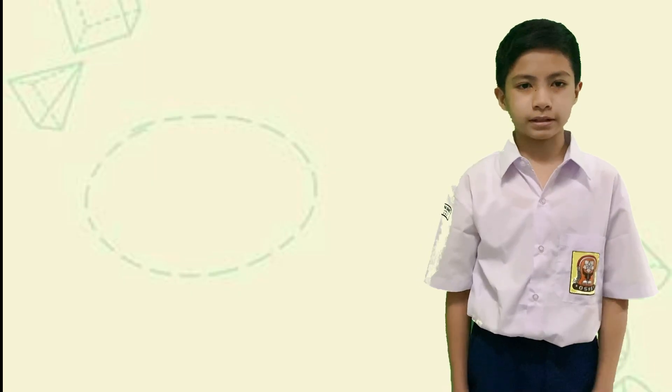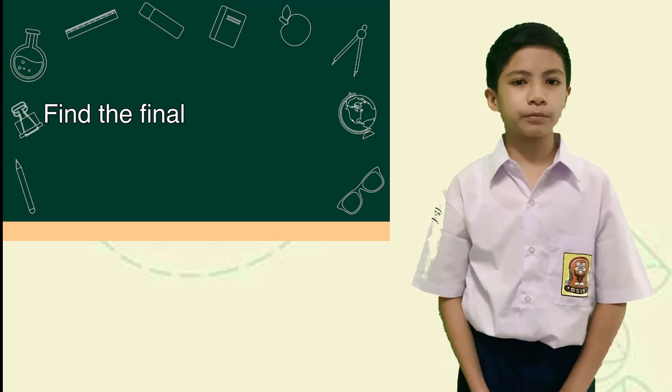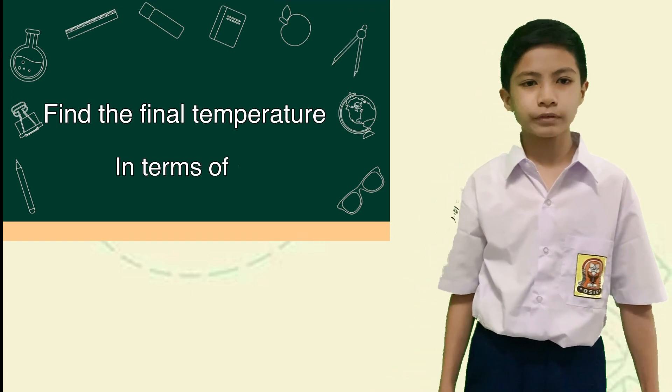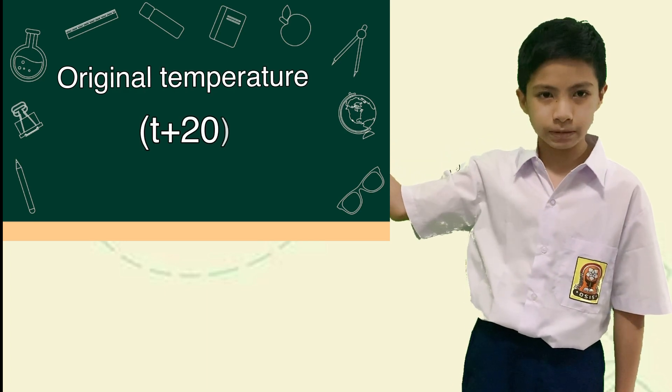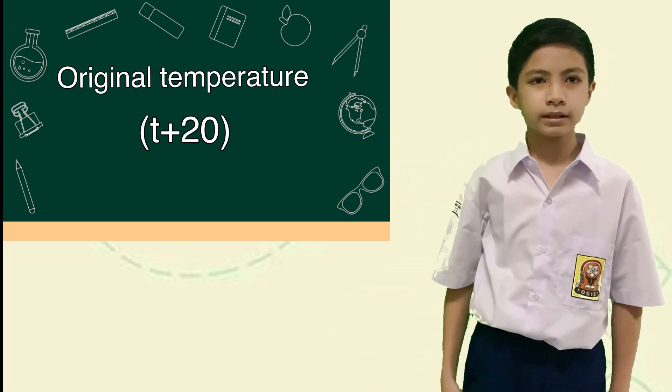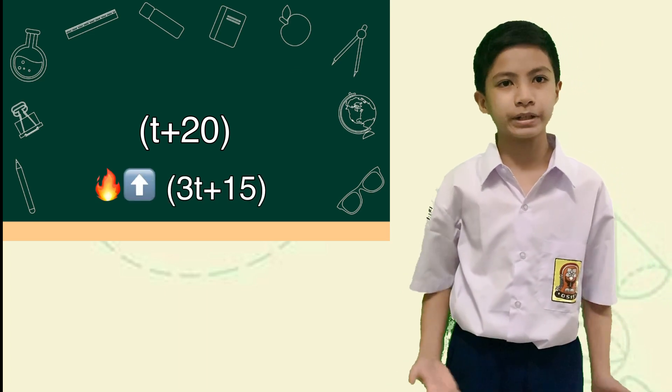Now, let's start with question A. In here, we have to find the final temperature in terms of T. If the original temperature is T plus 20 degrees Celsius, it's said that it is heated up by 3T plus 15 degrees Celsius.